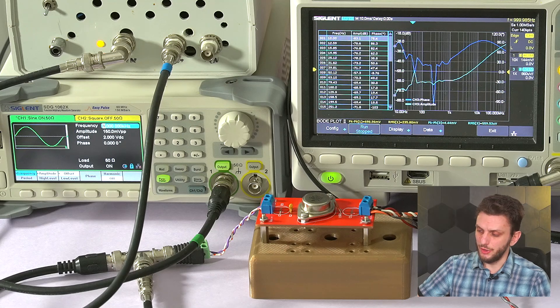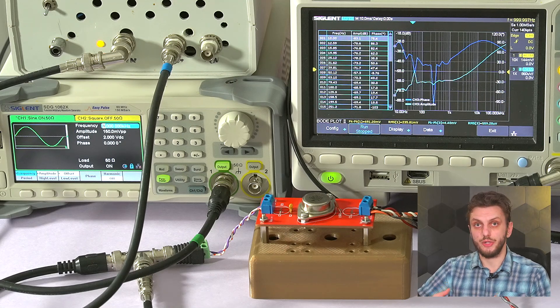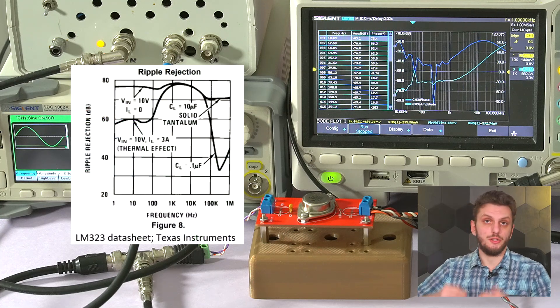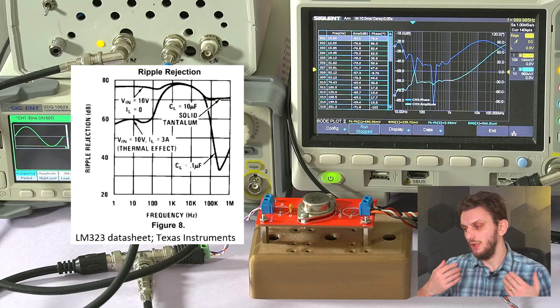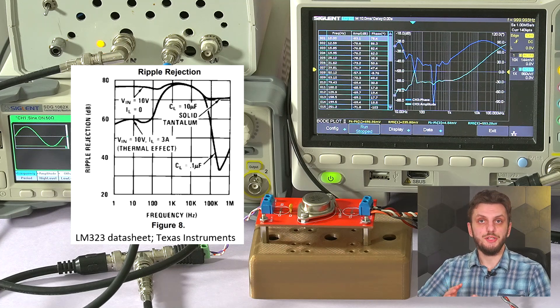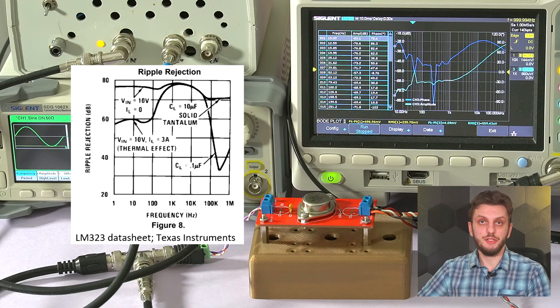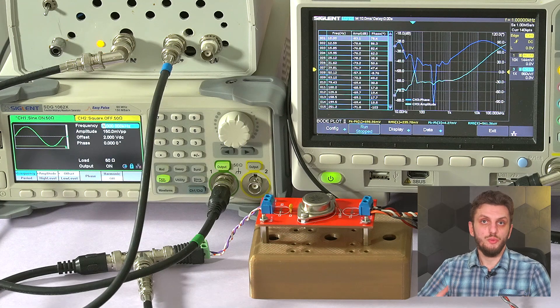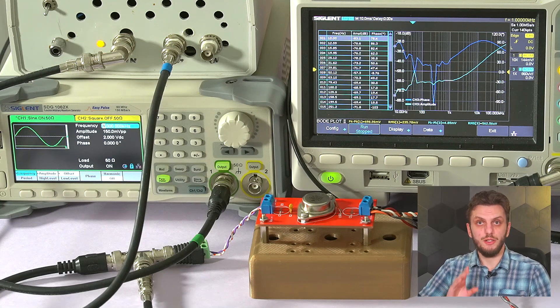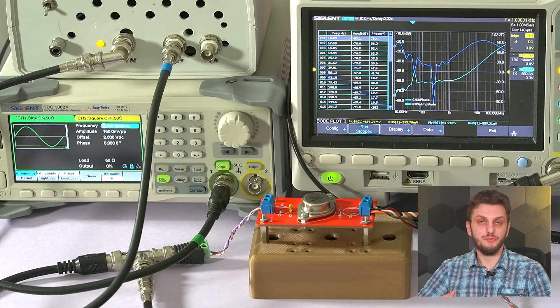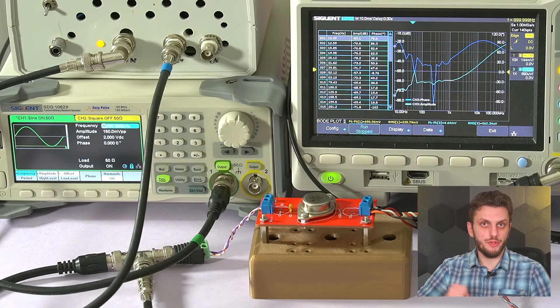Now for this particular part, you do get this sort of graph in the datasheet, and while the datasheet and our measurement are not exactly the same, but to an extent, that is because of the different test conditions. So the datasheet uses one specific set of test conditions, whereas we have used a different set. As always, it's important to test the power supply under the specific use case conditions, and the datasheet information is there just for information purposes.